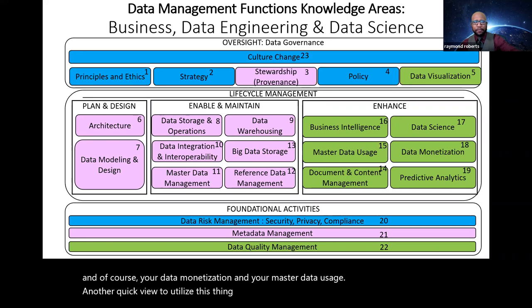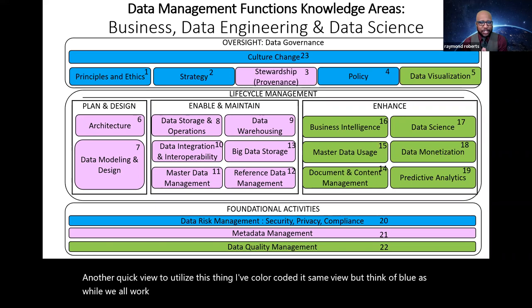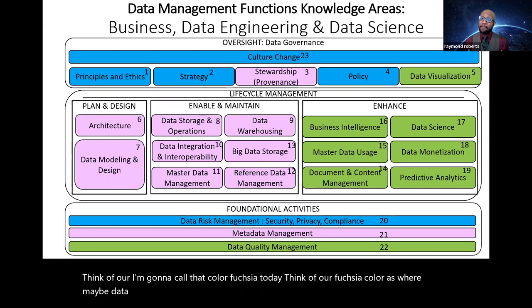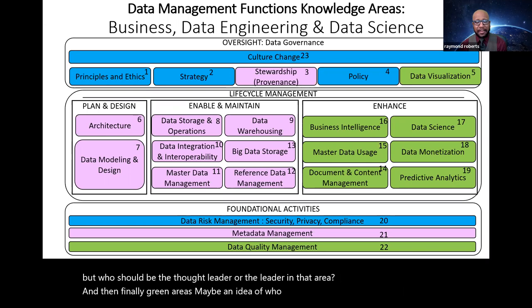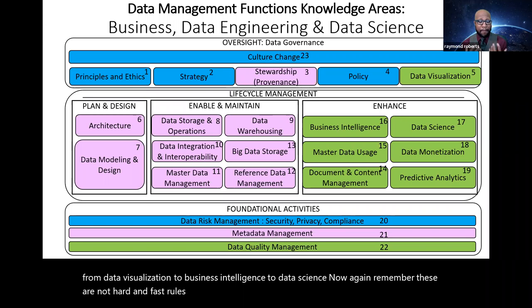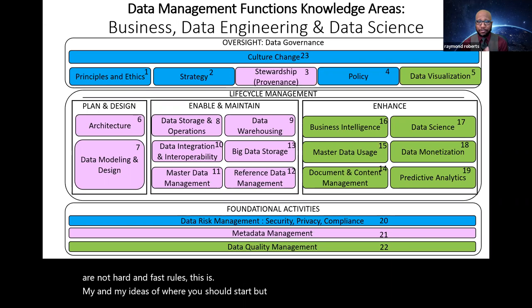Another quick view to utilize this thing, I've color coded it, same view, but think of blue as while we all work together as a team in our organizations and our projects. Think of the blue part as the items that maybe the business side of the house should be taking more of a lead on. Think of our, I'm gonna call that color fuchsia today. Think of our fuchsia color as where maybe data engineering should be taking more of a lead. Again, we're all working together, but who should be the thought leader or the leader in that area. And then finally, green areas, maybe an idea of who should be taking the lead for those areas from data visualization, to business intelligence, to data science. Now, again, remember these are not hard and fast rules. This is my presentation and my ideas of where you should start. But again, the correct answer is whatever your organization decides.